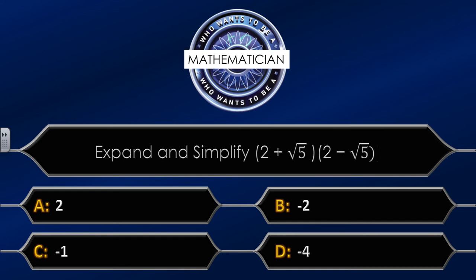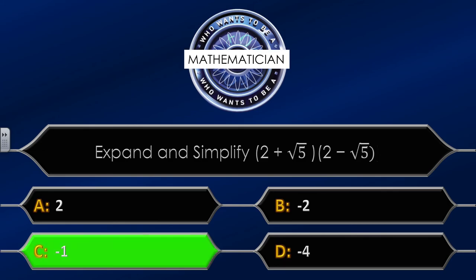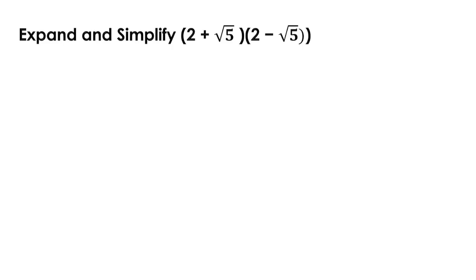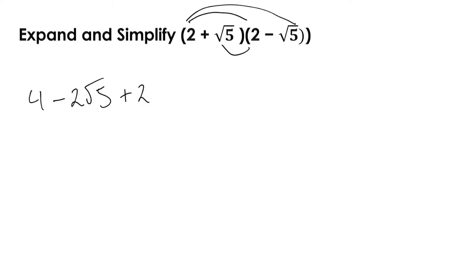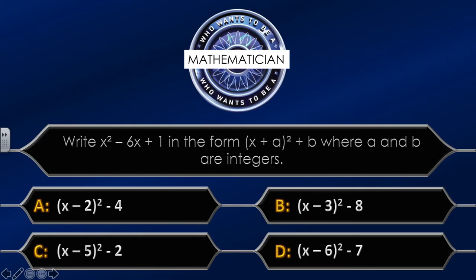The correct answer is C, minus 1. Expanding like a double bracket: 2 times 2 is 4; 2 times minus root 5 is minus 2 root 5; root 5 times 2 gives positive 2 root 5; and root 5 times minus root 5 gives minus 5. Simplifying: minus 2 root 5 plus 2 root 5 cancels to zero. We're left with 4 minus 5, which equals minus 1. And that's our final answer.